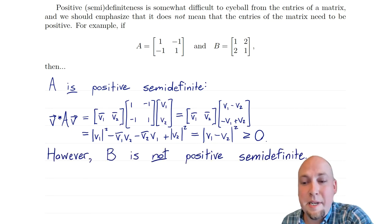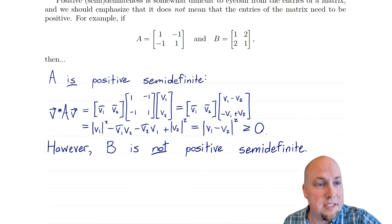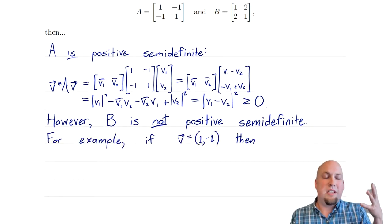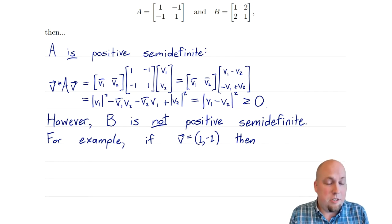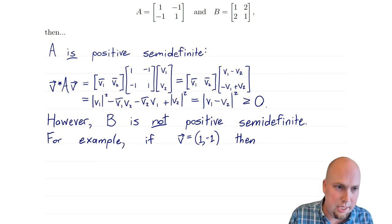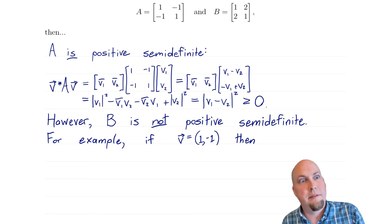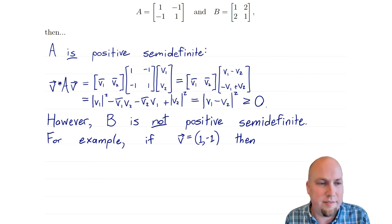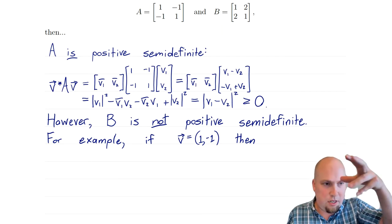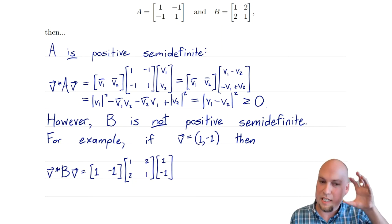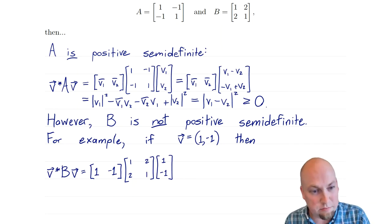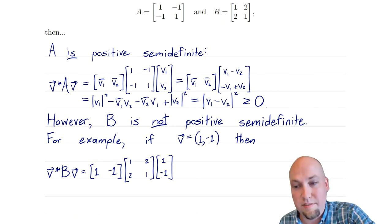On the other hand, matrix B is not positive semi-definite. To show something is not positive semi-definite, you just have to find one particular vector for which V*BV gives a negative number — that's much easier than showing it holds for every vector. So we're going to pick a particular vector, and if we get a quantity less than zero, we're done — we know it's not positive semi-definite.